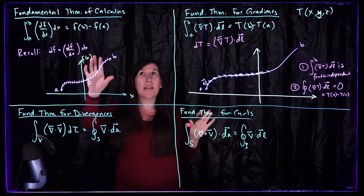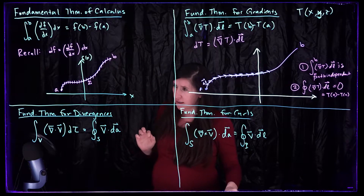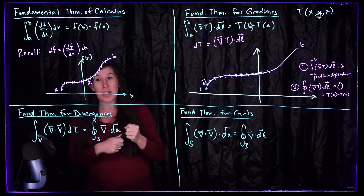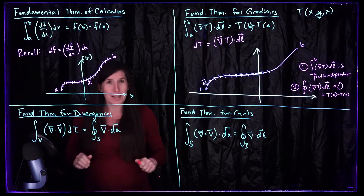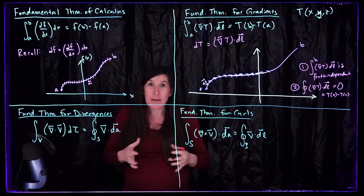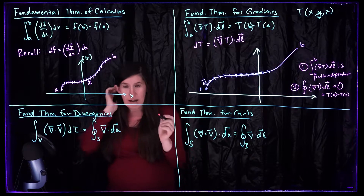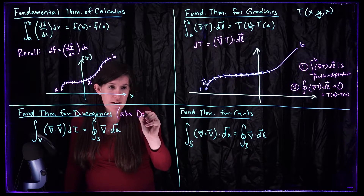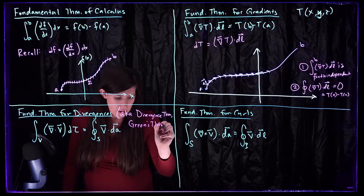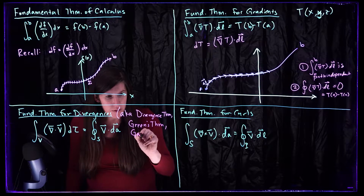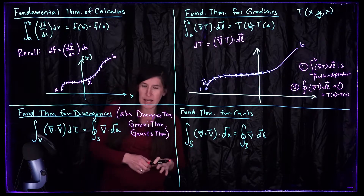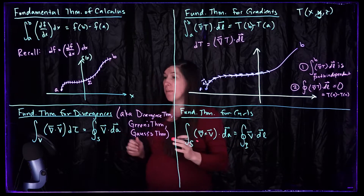That's the fundamental theorem for gradients, and we see there are a ton of parallels with our standard fundamental theorem of calculus. The fundamental theorem of divergences — also called the divergence theorem, Green's theorem, and Gauss's theorem — has many names because it's an incredibly important theorem. Whenever you hear these names, we're really talking about this identity.